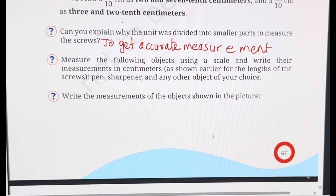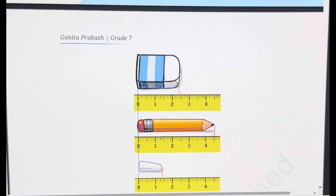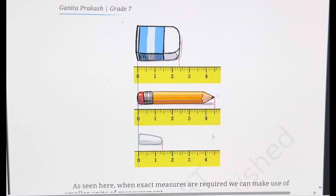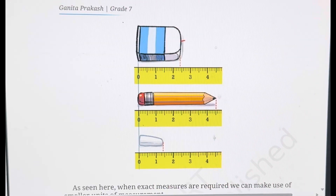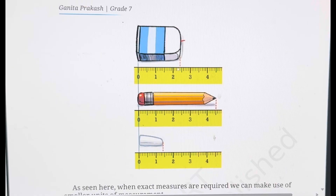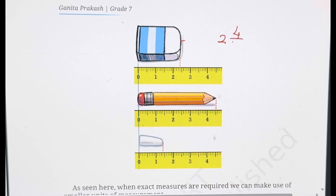There are some objects given in the next picture. The first object is an eraser. You can see 2 centimetres is complete, and the eraser — the red line — is between 2 and 3. If you count the smaller lines: 1, 2, 3, 4. So out of 10, it is 4 parts. You can write this as 2 whole 4 upon 10 centimetres — that is the length of the eraser.